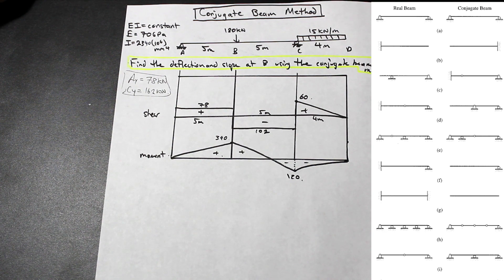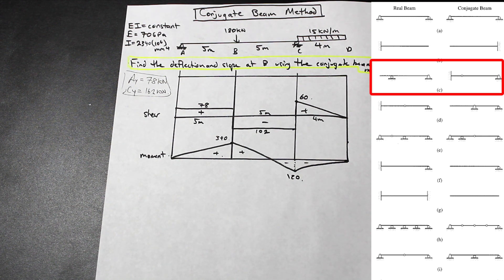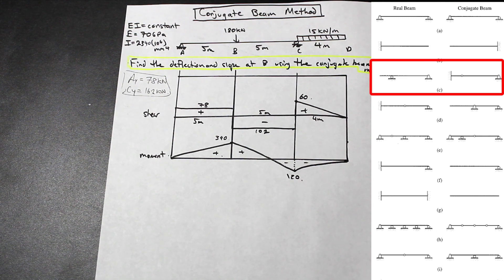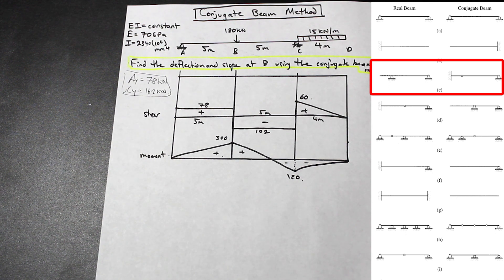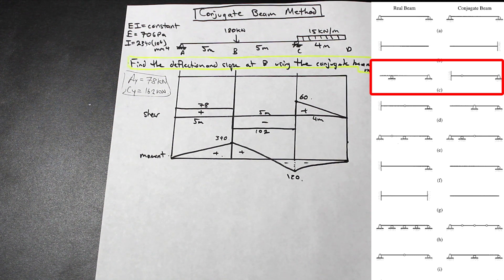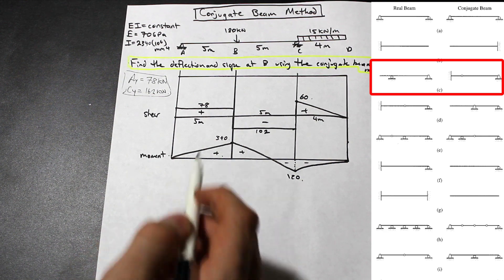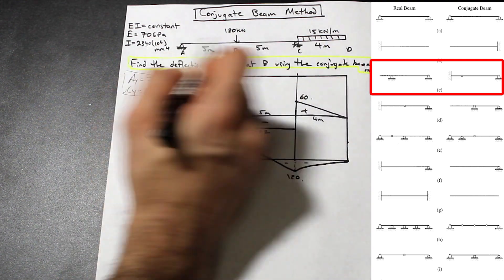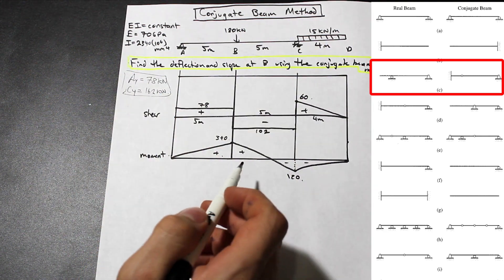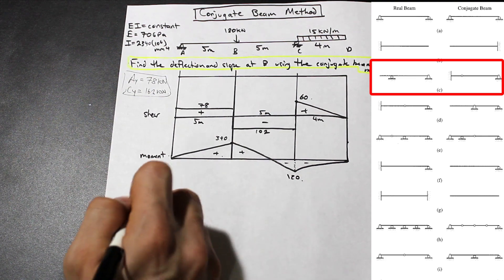Looking at beam C on the table, the real beam matches our beam in the question. The free end becomes a fixed end. In a continuous beam, where a roller is in between supports or a free end, it becomes a hinge. A pin on the end of the beam stays as a pin. So let's copy example C from the table for our conjugate beam.